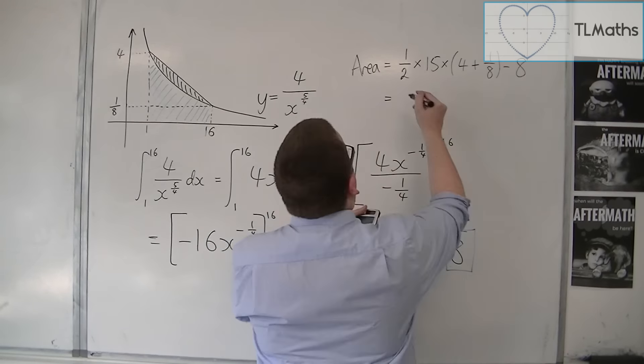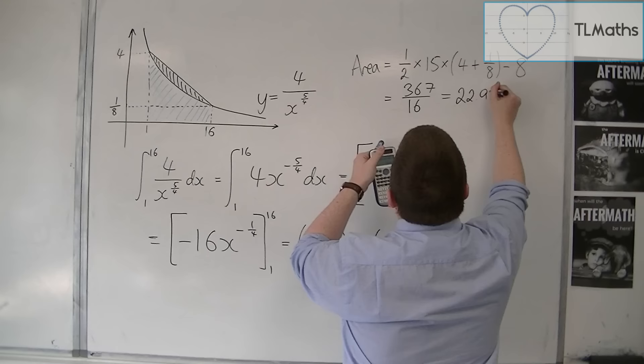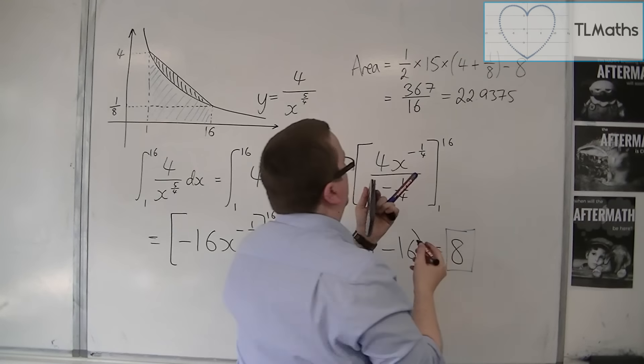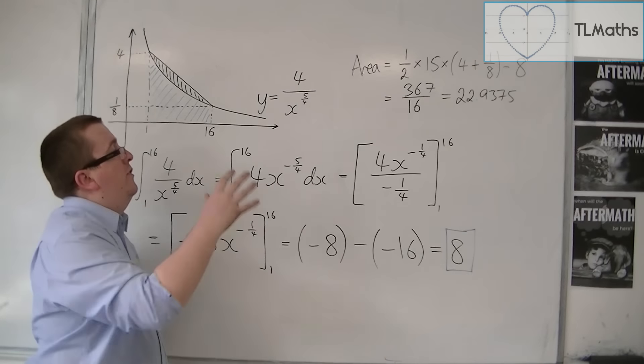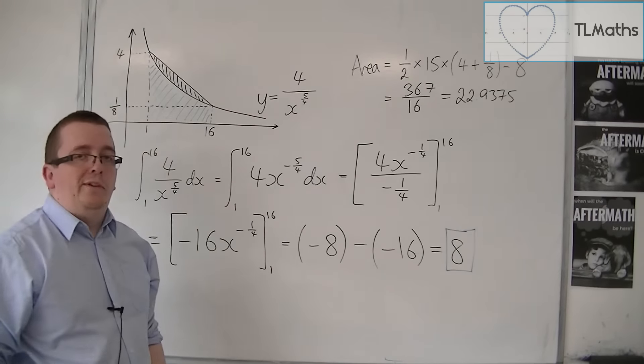And that gets me 367 over 16, OK, which is exactly 22.9375, OK? And that is the shaded region that I was looking for.